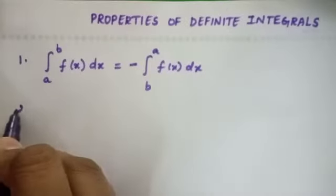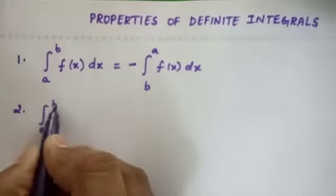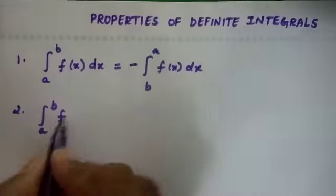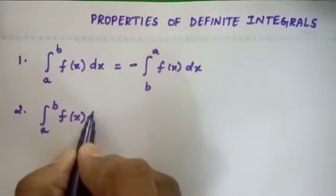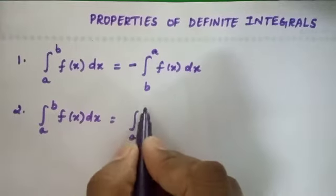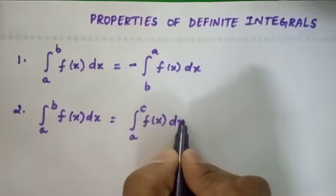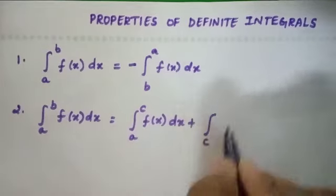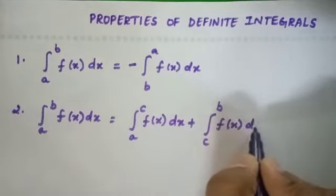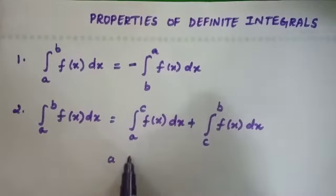The second property is: the integral over a to b of f(x) dx is equal to the integral over a to c of f(x) dx plus the integral over c to b of f(x) dx, where c lies between a and b.